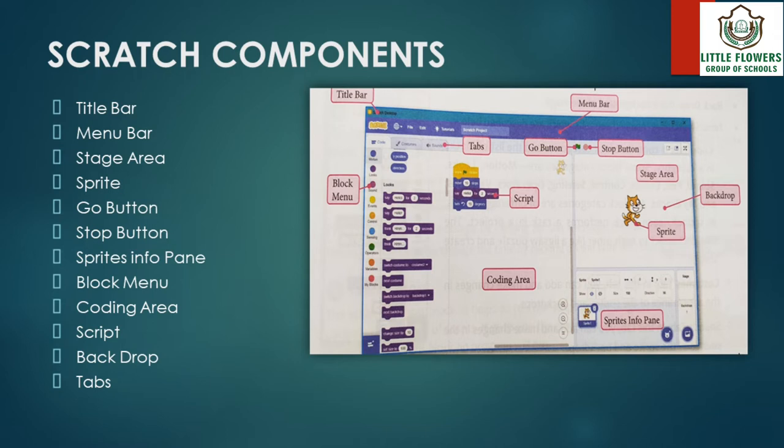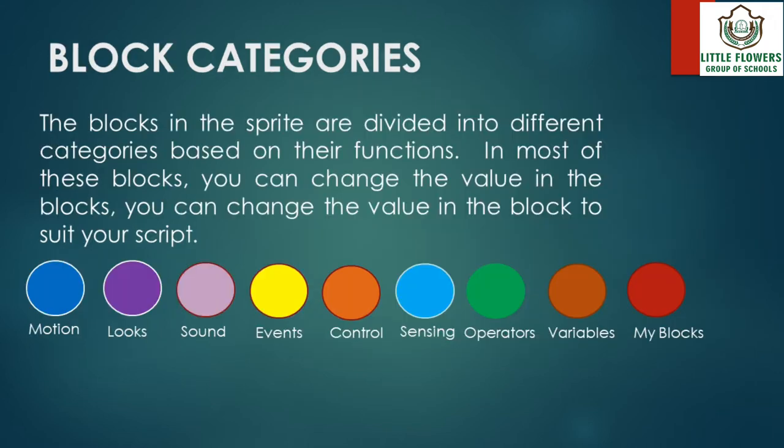Scratch components: we can see here the title bar, menu bar, stage area, sprite, go button, stop button, sprites info pane, block menu, coding area, script, backdrop, and tabs.